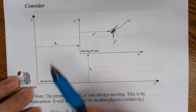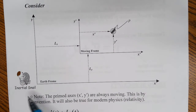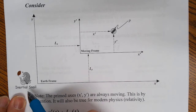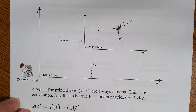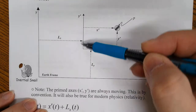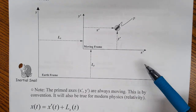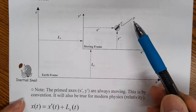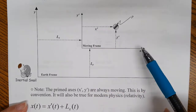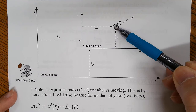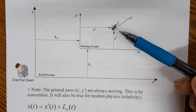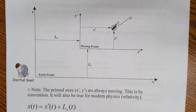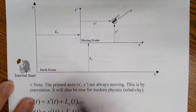Consider a moving frame within the earth frame. This inertial snail is actually on earth, not moving relative to earth. Obviously earth is moving, but relative to earth this inertial snail is not moving. It observes a moving frame such as a boat, airplane, or spaceship moving in space near earth. Inside that moving frame there's another particle — an occupant of the spaceship — moving within the moving frame. How do we analyze the motion relative to the earth, relative to the inertial snail?